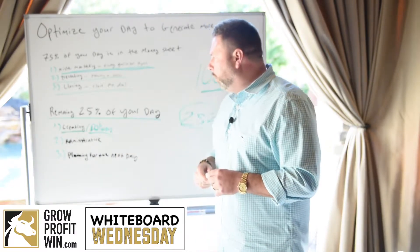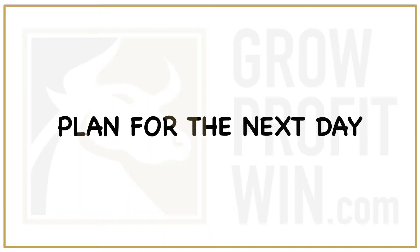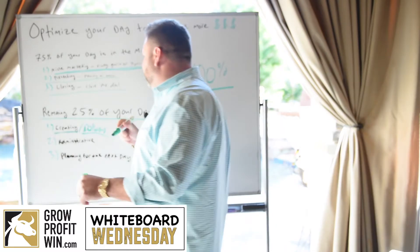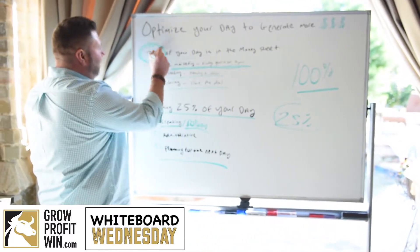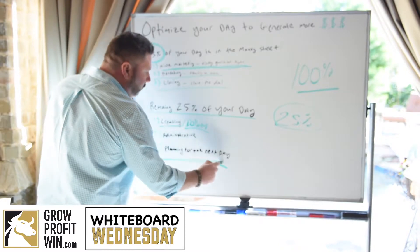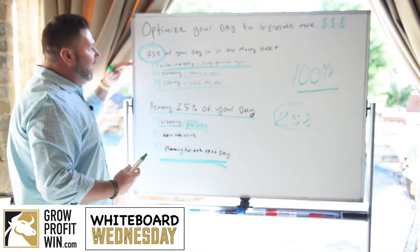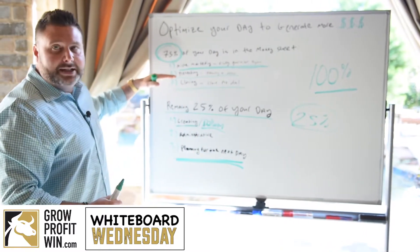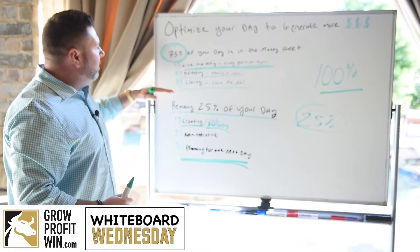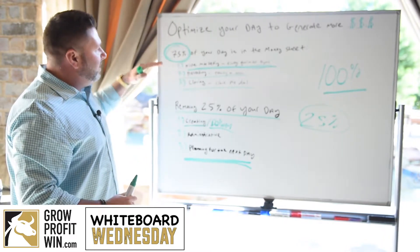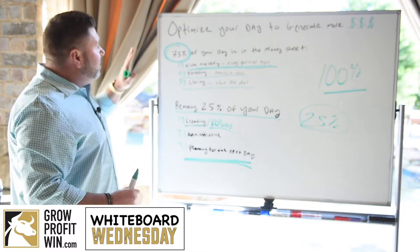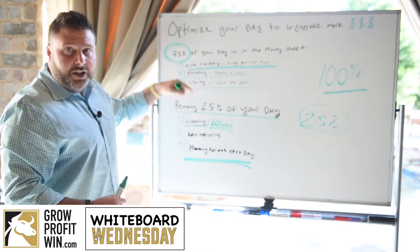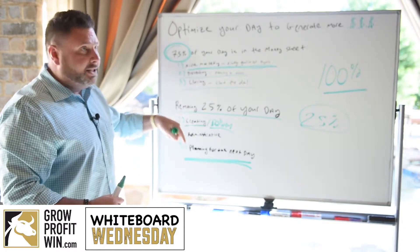Third is planning for the next day. So many people don't realize you cannot do that 75 percent well or effectively if you don't map out and prioritize the six to eight activities you're going to do — to find prospects, present them the offer, and get it closed. The money sheet is free — check it out, it's amazing, it'll change your life if you follow it every day.